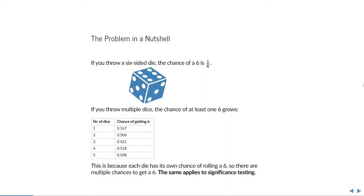Let's start with a very simple example: a six-sided die. If we assume the die is fair, then the chance of any particular outcome is 1 in 6, because there are six different faces of the die. So the chance of getting the value 6 is also 1 in 6. However, if we throw multiple dice, or if we throw a single die multiple times, then we have multiple chances of getting a 6, and therefore the chance of getting at least one 6 will increase.